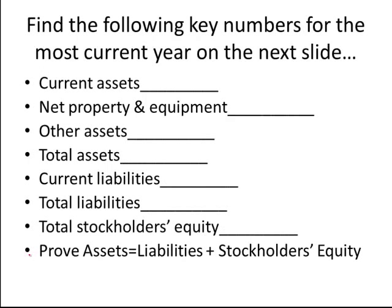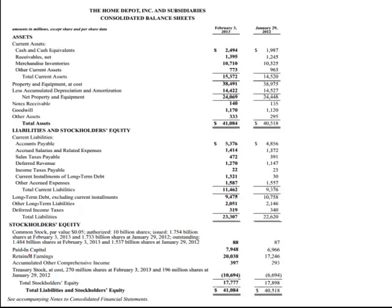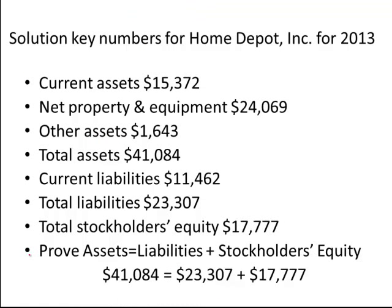Your turn. You're going to find those same numbers, but now for Home Depot. Pause the video and take a few minutes. Remember: current assets, total assets, property plant and equipment net, current liabilities, total liabilities, and total shareholders' equity. How'd you do? Did you find those? Did you prove that the accounting equation — the balance sheet — does balance? That's Home Depot.